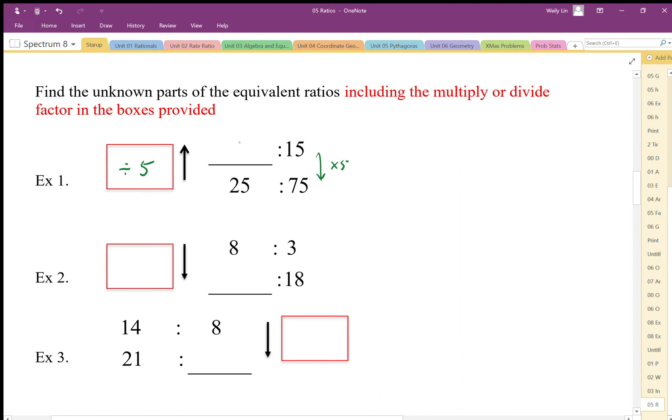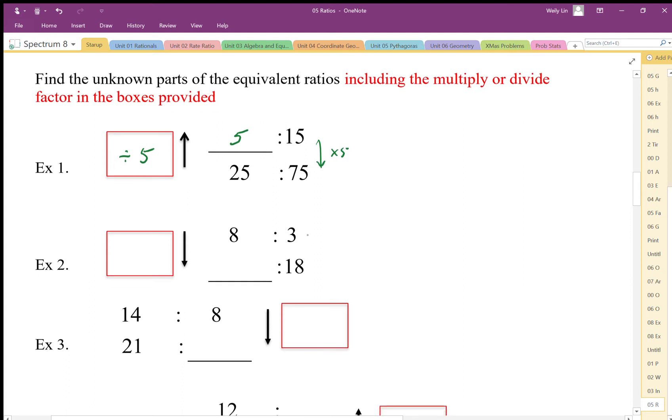So 25 divided by 5 gives me 5 to 15. And again, some of you may have noticed that this is a 1 to 3 ratio, so you could have worked it out using the horizontal multiplier.